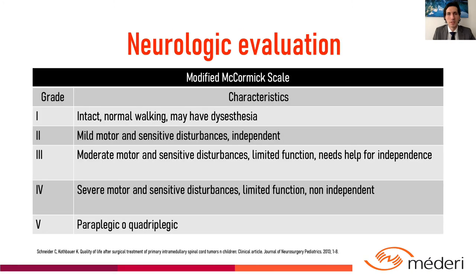Neurologic evaluation and outcome were registered with the modified McCormick scale, which includes five grades of neurologic compromise, where grade 1 is intact and grade 5 is paraplegic or quadriplegic.